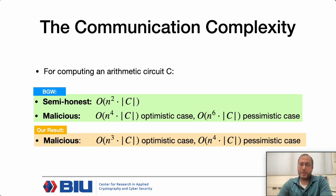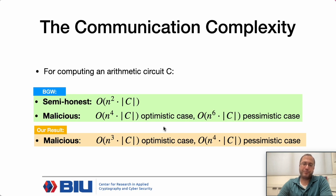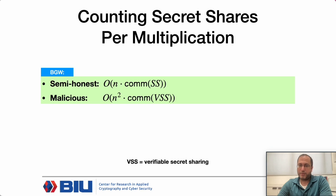Our result: we show a protocol that improves both the optimistic and the pessimistic cases. The optimistic case is n-cubed times the size of the circuit, and in the pessimistic case it is n-to-the-four times the size of the circuit.